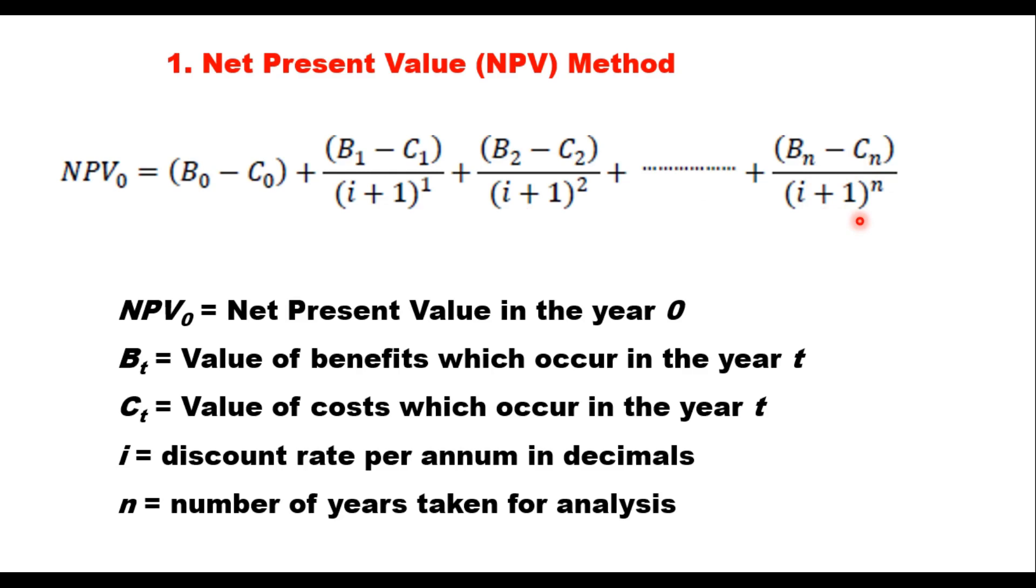Now, let us take one example to illustrate this NPV method. The example is like this: the cost of improving an existing road 25 km long is Rs. 4 lakh per km. The data on road user cost, accident cost and maintenance cost with and without improvement are given in table 1 for a 10-year period after the completion of the improvement. Assuming a discount rate of 10%, find out whether the project is economically justifiable or not using the NPV method.